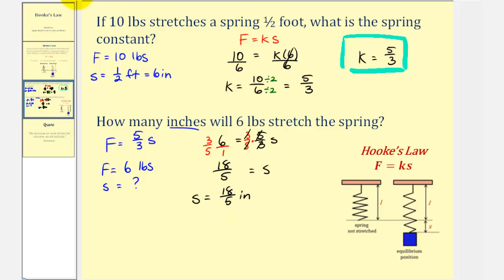Let's convert this to a mixed number. Eighteen divided by five. There are three fives in eighteen. Three times five is fifteen. Subtract. We have a remainder of three, which means we can also express this as three and three-fifths inches.